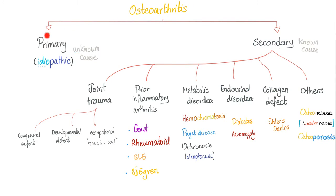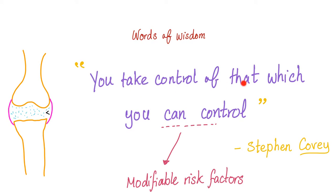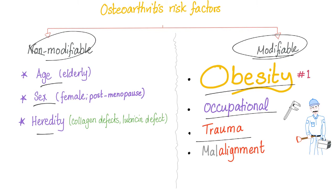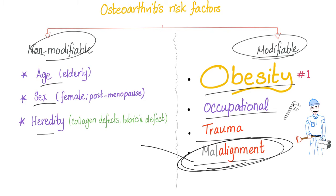Don't forget that osteoarthritis can be primary, which is idiopathic, and secondary, which is secondary to other conditions. You control what you can control — modifiable risk factors. Non-modifiable risk factors include age, sex, and heredity. Modifiable risk factors include obesity, occupational trauma, malalignment, meniscal injury, quadriceps weakness, and loss of proprioception.